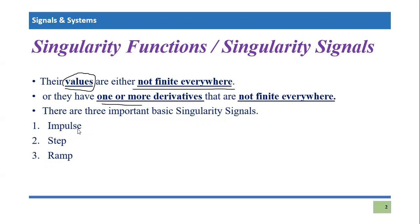These three signals are types of singularity functions and will be defined in coming tutorials so that one can understand them clearly. This is just a basic introductory tutorial on the topic. In coming tutorials, we will discuss the impulse, step, and ramp signals in detail — their graphs and equations. If you have any confusion or questions regarding any of these definitions, please feel free to comment your queries in the comment section. Thank you so much for listening.